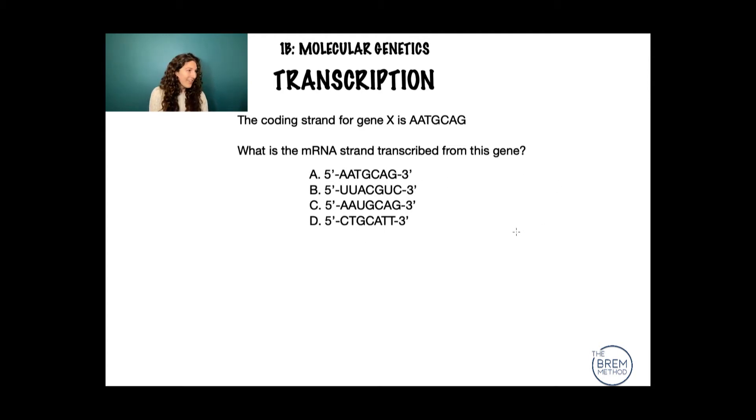So you'll notice they're all five prime to three prime. This is pretty common. The convention is if they don't say anything at all, like they do up here, or if you're writing it out for a paper or something like that, you always want to write the strands five prime to three prime. Always check the five prime to three prime direction so that you can make sure that you are transcribing the gene in the correct direction as well.